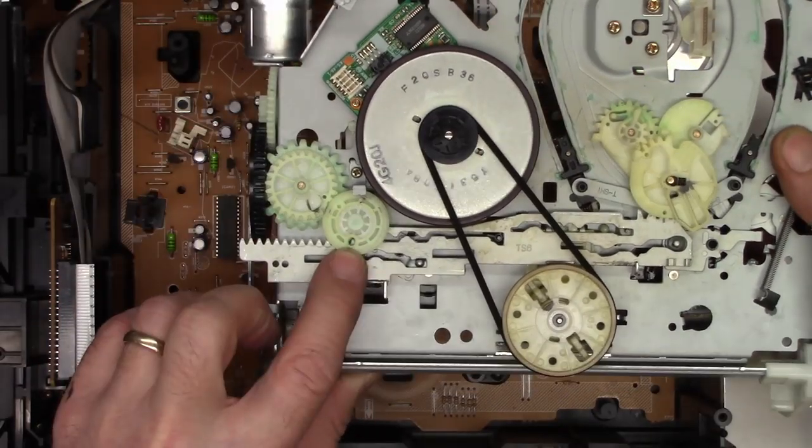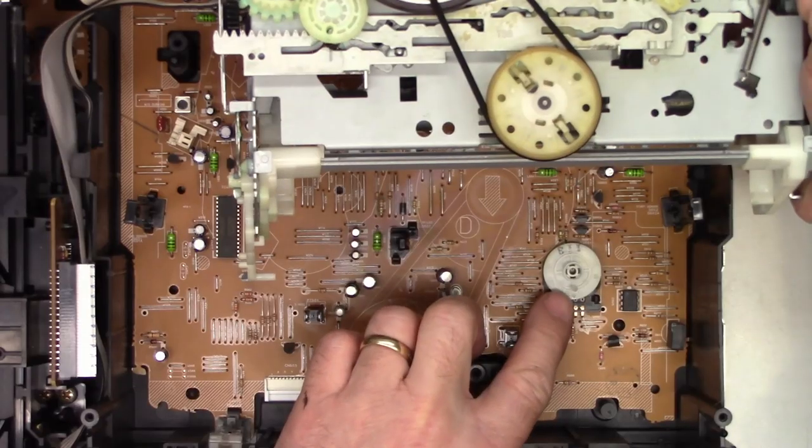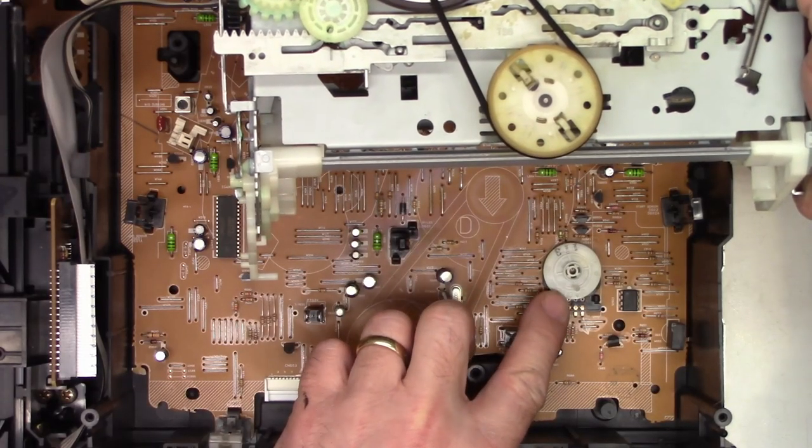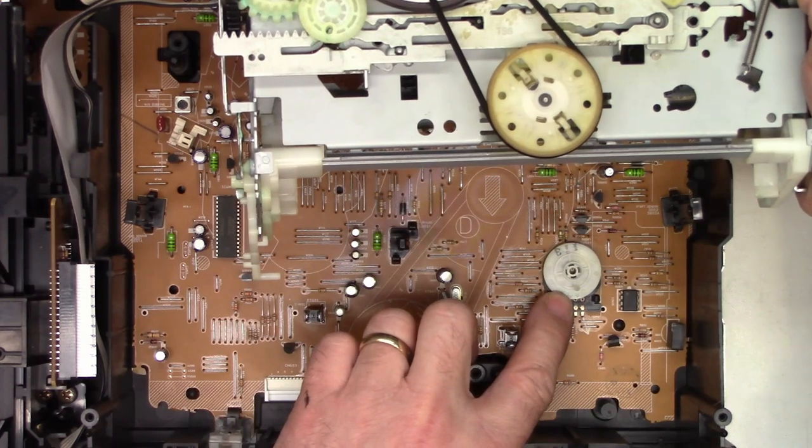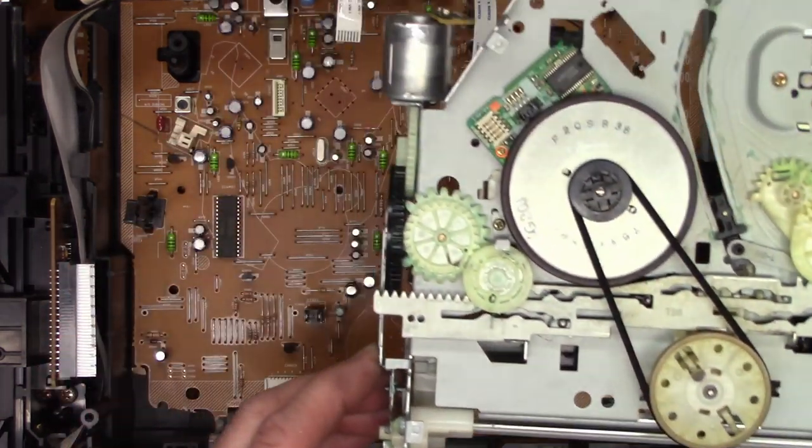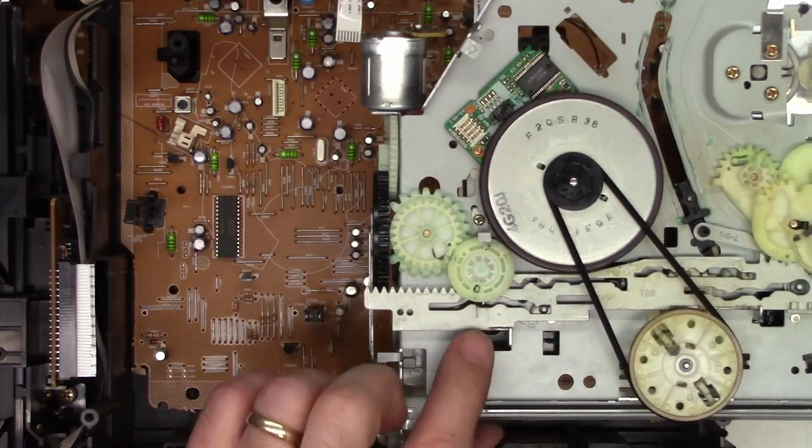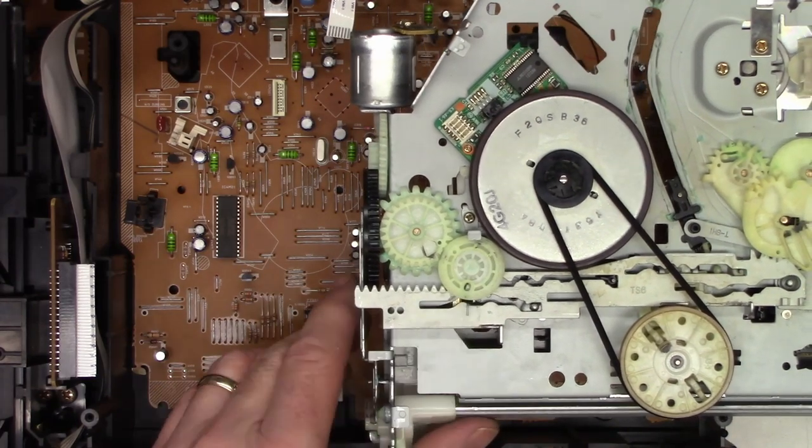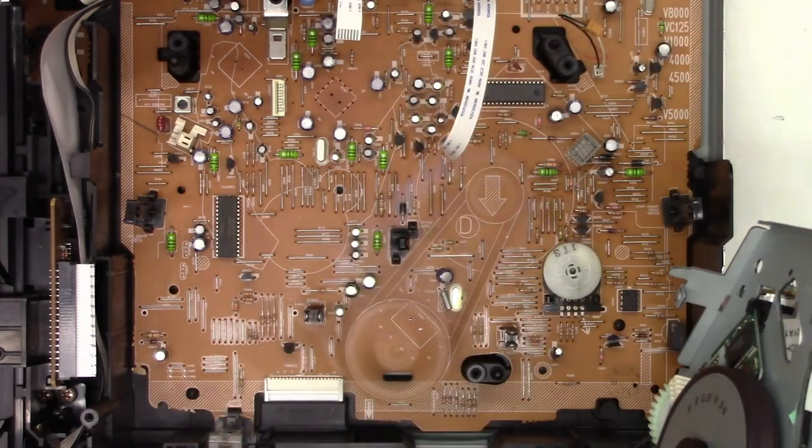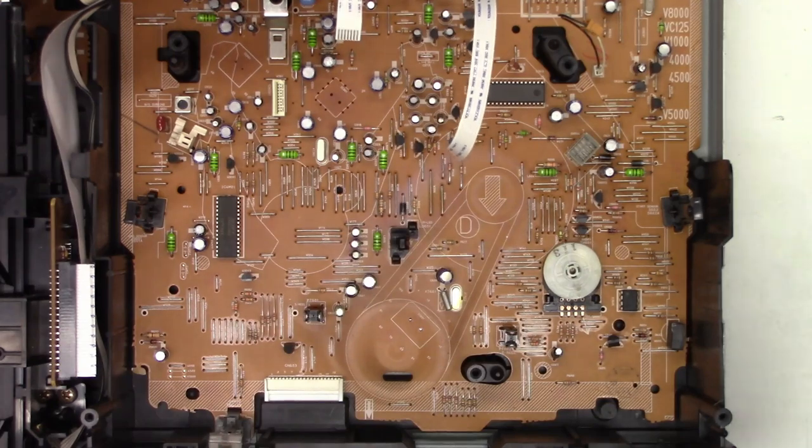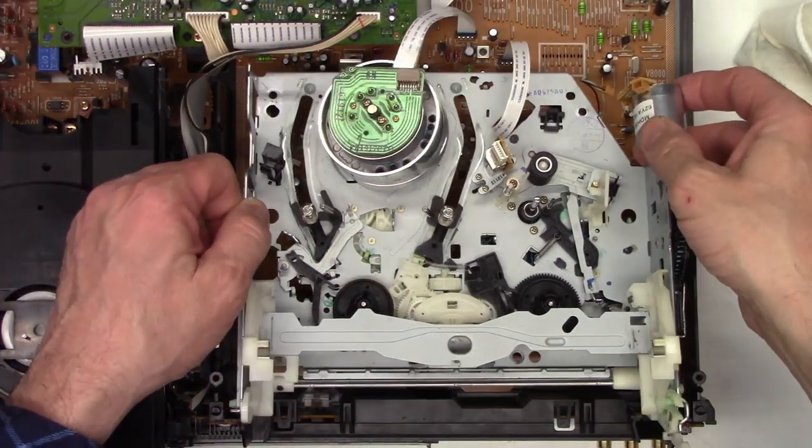So now this hole right here is where this pin needs to go. And it's offset very slightly. So I'm going to turn it just a little bit. About that far. To make sure it lines up with this hole right here. So I'm going to reassemble the two halves. They should lock into place.